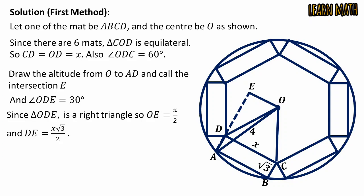We can obtain these values by taking sine 30 equals OE divided by x and cosine 30 equals DE divided by x.